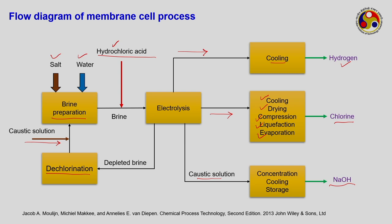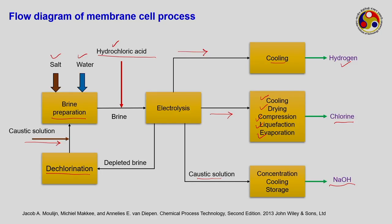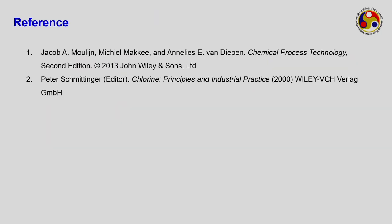In summary, the purest NaOH (alkali) is obtained from the mercury cell, while the most selective process producing the purest chlorine is the membrane cell. All three methods together are called the chloroalkali process, which is the workhorse for chlorine gas production today. For further reading, refer to the textbook and Schmittiger's 'Chlorine: Principles and Industrial Practice,' which contains detailed process diagrams for all three cell types.